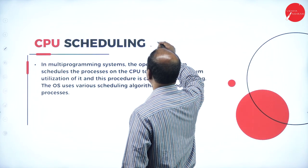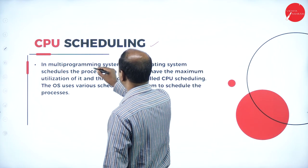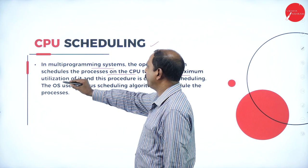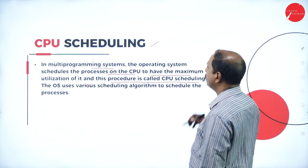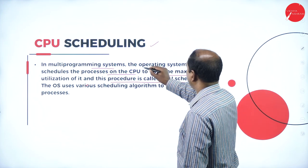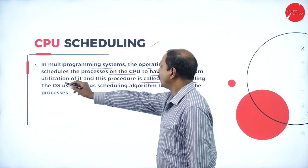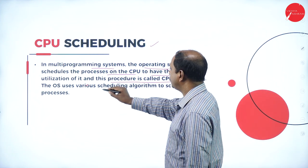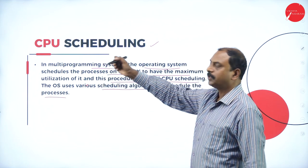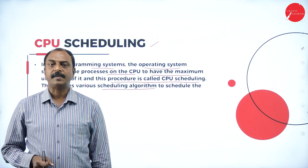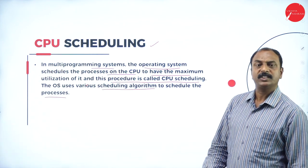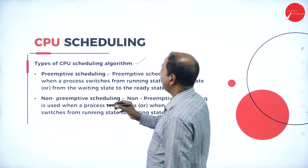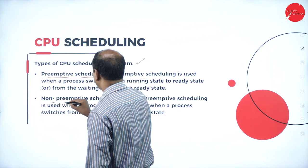In the next slide we will see CPU scheduling. In multiprogramming systems, the operating system schedules processes on the CPU to have maximum utilization of it — this procedure is called CPU scheduling. The OS keeps the CPU busy and maximizes CPU utilization using various scheduling algorithms. There are two types of scheduling algorithms: preemptive scheduling and non-preemptive scheduling.